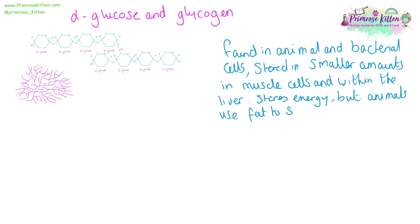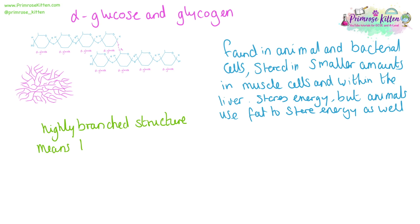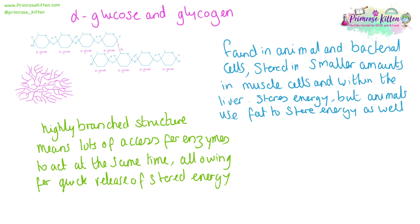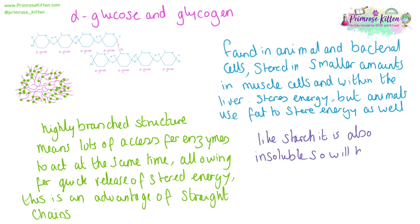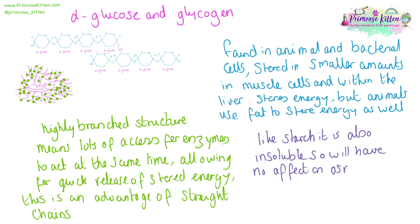Glycogen can be used as a store of energy, but more frequently animals will use fat to store energy. The highly branched structure means that there are lots of access points for an enzyme, so it can be broken down quickly, easily and readily when energy is needed. Like starch, it is also insoluble, so it will have no effects on osmosis and cannot diffuse out of cells.